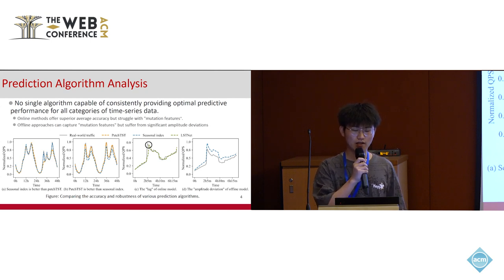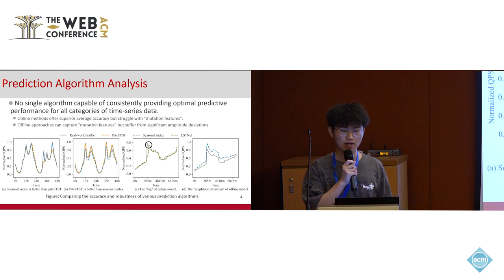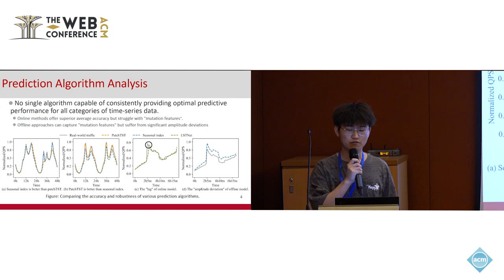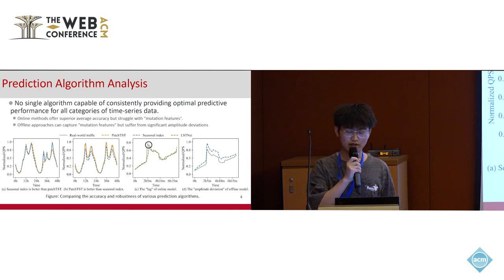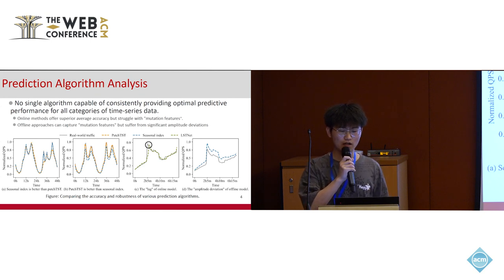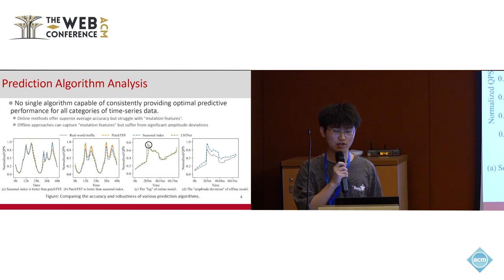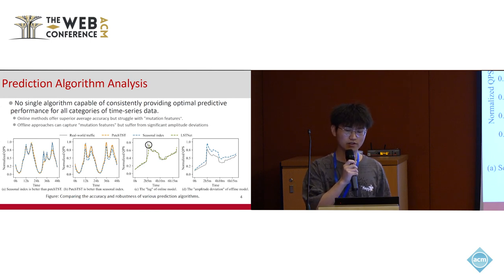Additionally, we found that online methods, which predict a short period in real-time, although accurate on average, struggle to handle sudden workload changes, which we call mutation features. This is illustrated by the lag issue depicted within the circle in Figure C. On the other hand, offline approaches that predict a long period at one time can capture mutation features but suffer from significant amplitude deviations, as Figure D shows.